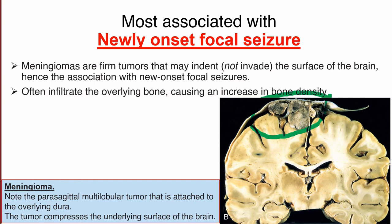Sometimes meningiomas can infiltrate the overlying bone and cause an increase in bone density, which can be appreciated on MRI. Here again we can see a parasagittal multilobular tumor mass that is attached to the overlying dura and is compressing the underlying surface of the brain.